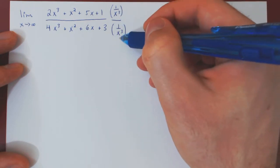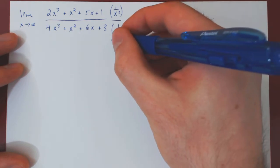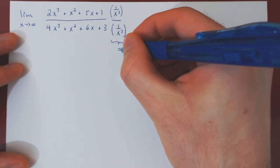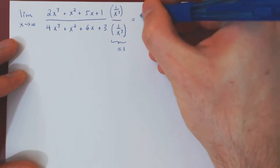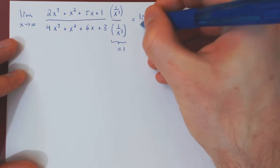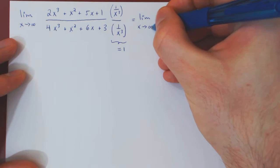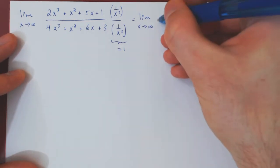So 1 over x cubed over 1 over x cubed is equal to 1, so we are not changing the expression, simply multiplying it by 1. But then, by dividing top and bottom by the dominant term, the limit will become trivial.